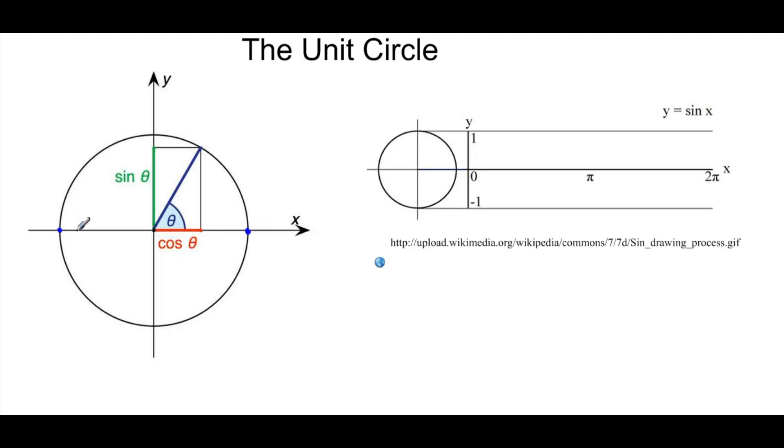It's negative 1 over here, theta equals pi. And it's 1 again over here, theta equals 2 pi. Likewise, sine of theta is equal to 1 up here at pi over 2.